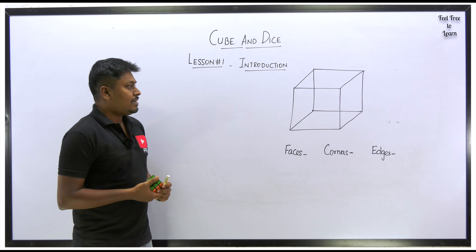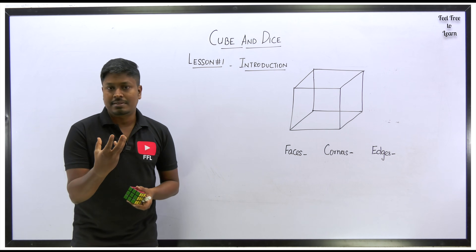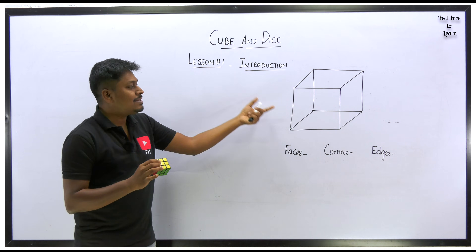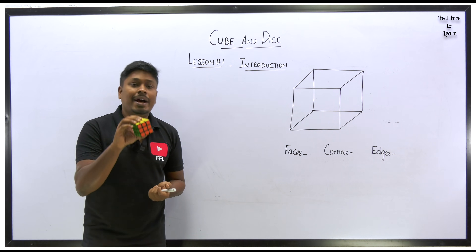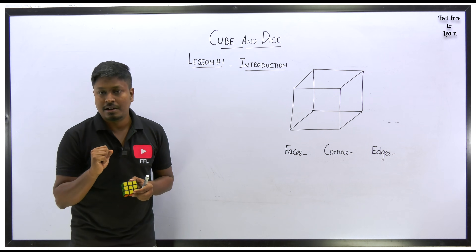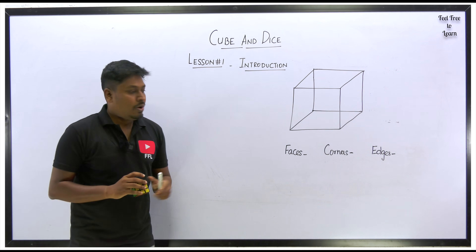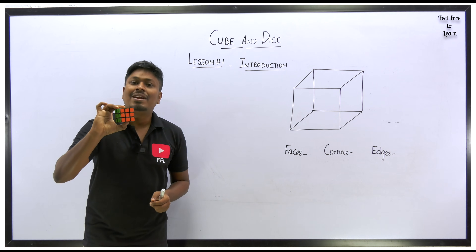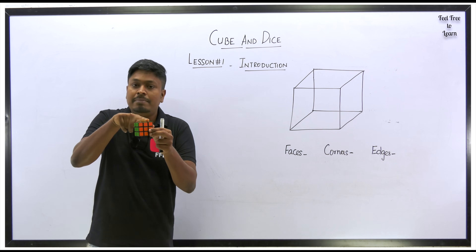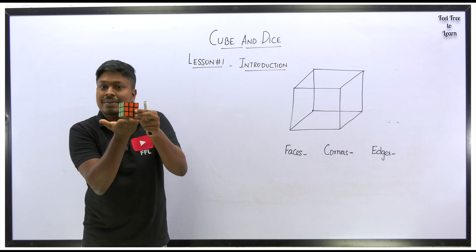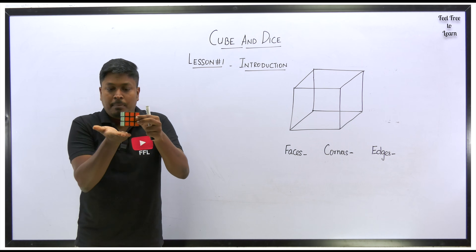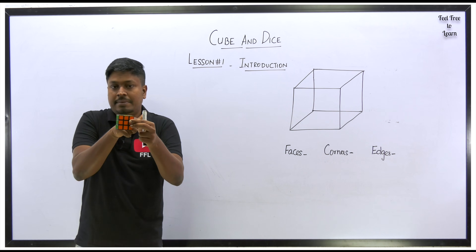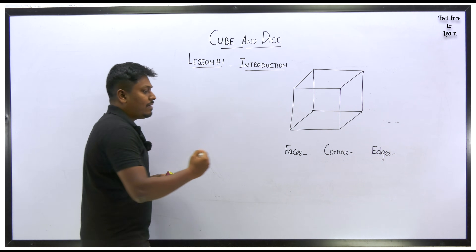A cube is called a square box. The length, breadth, and height of all sides are equal — that is why it is called a cube. If any one dimension changes, it becomes a cuboid, which is a rectangular box. Now, there are three important words in cube: faces, corners, and edges. Faces are the surface areas — top face, bottom face, front face, back face, right face, and left face. Totally, a cube has six faces.